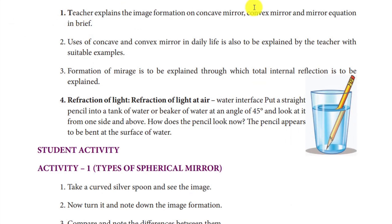For a concave mirror, the image can be a real image depending on the object distance. Concave mirrors form inverted images that can be projected on a screen. Convex mirrors always form virtual, erect images that cannot be projected on a screen.